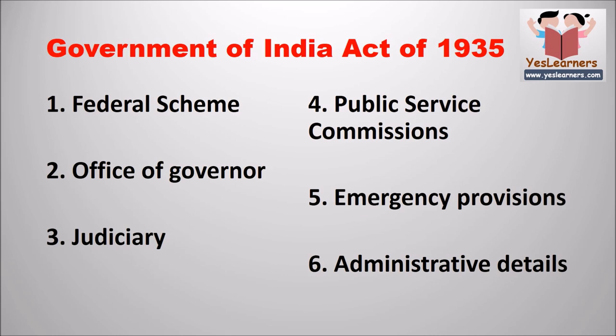Nearly 75 percent of the Indian Constitution can be said to be a reproduction of the Government of India Act 1935. The Government of India Act 1935 is known as the skeleton or blueprint of the Indian Constitution. Provisions borrowed from it include Federal Scheme, Office of Governor, Judiciary, Ministry, Public Service Commissions, Emergency Provisions, and Administrative Details.